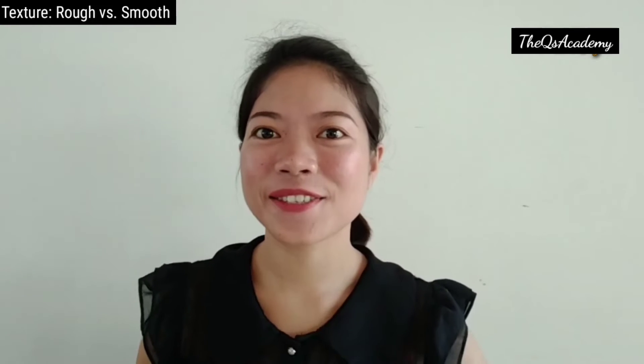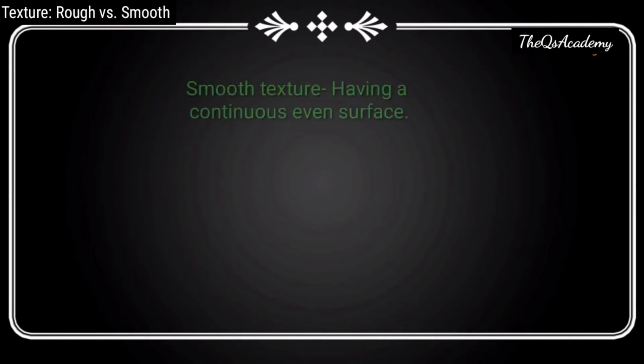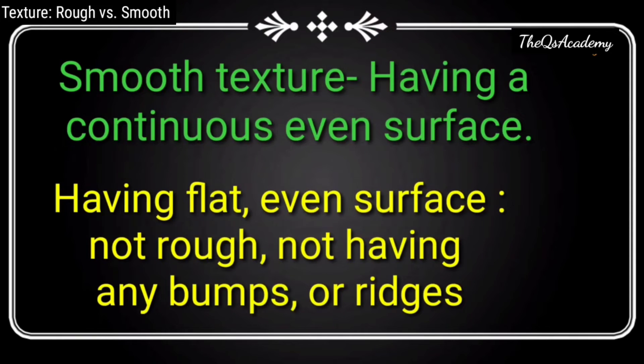So now let's discuss what smooth objects are — smooth surfaces. Smooth texture: having a continuous, even surface; having a flat, even surface; not rough; not having any bumps or ridges. I will show you things that have a smooth surface.